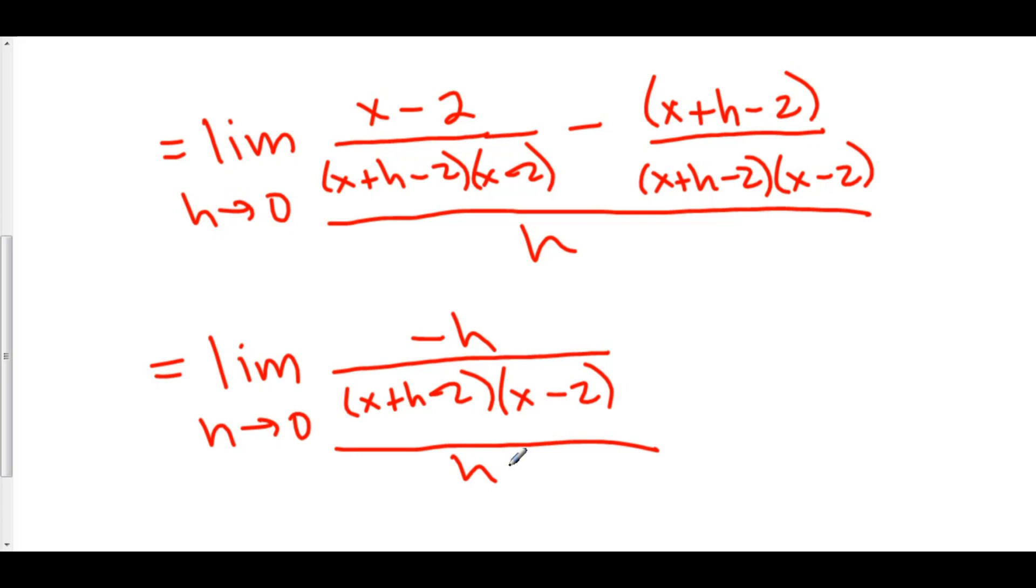When we divide by a fraction, this is really h over 1, we're really multiplying by the reciprocal. So dividing by h over 1 is the same thing as multiplying by 1 over h. And when we do this, you'll notice that my h's cancel out. But the negative still stays on top.